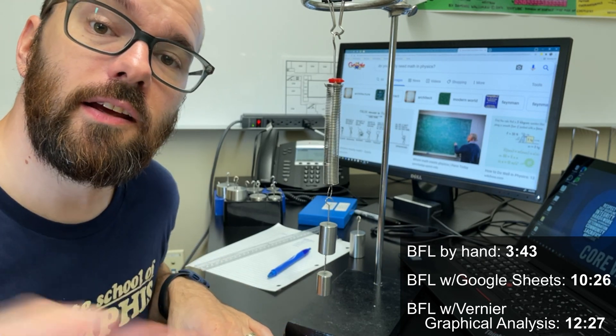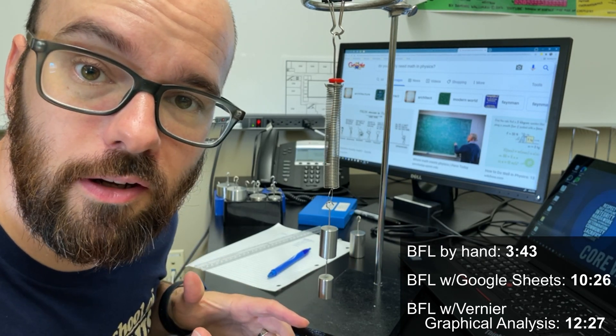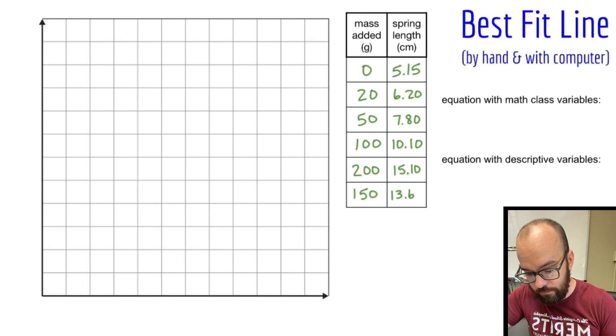Let's jump to the whiteboard, plot this data and draw a line of best fit. So let's start off with our data that I collected. After I added different amounts of mass, I saw how that affected the length of the spring. So it's my two columns of data.